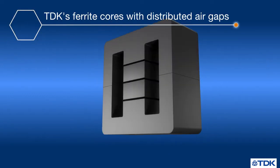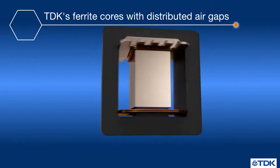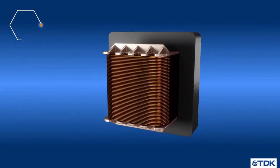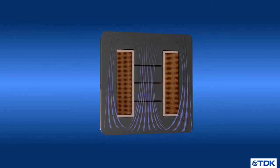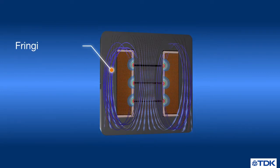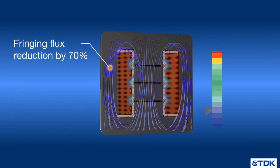TDK's distributed gap portfolio offers a solution to significantly reduce the fringing flux effect, electromagnetic emissions, and heating. Distributed air gaps lower the fringing flux losses by approximately 70 percent and limit temperature rise.